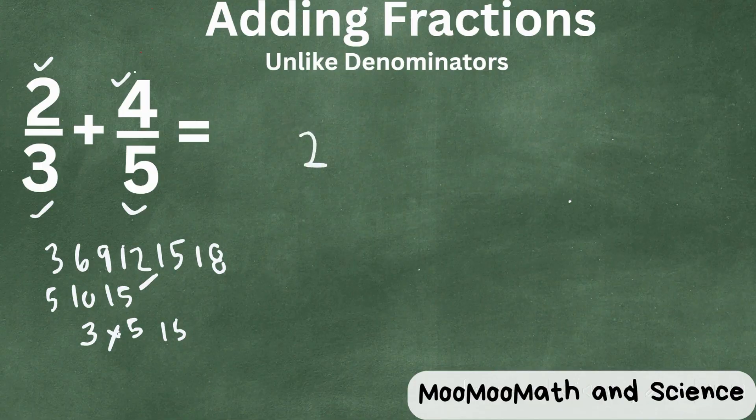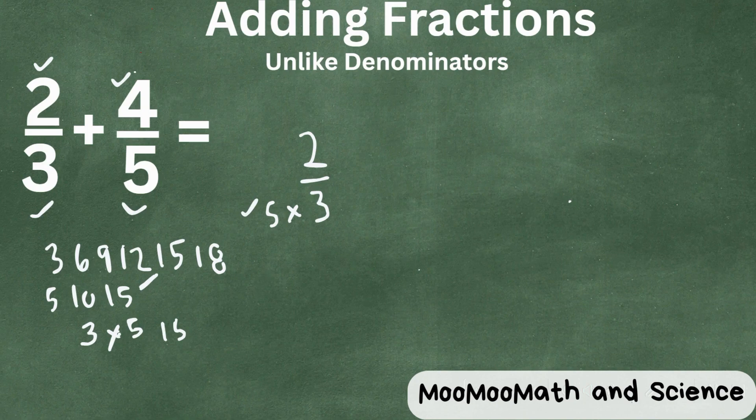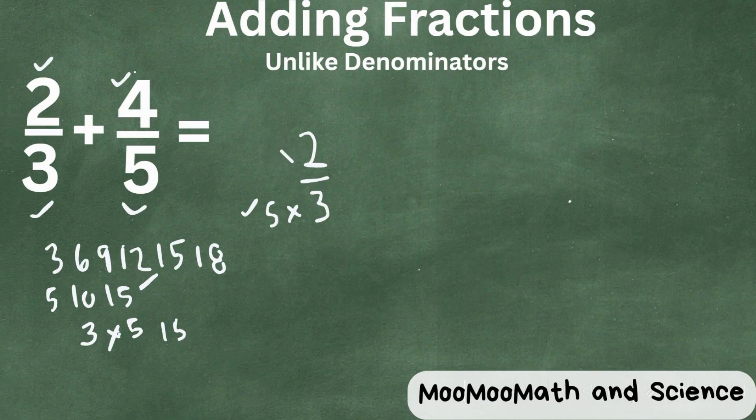So let's rename two-thirds. Three goes into fifteen five times. And what you do to the denominator, you need to do to the numerator. So we'll multiply two times five, and that gives us ten over fifteen.